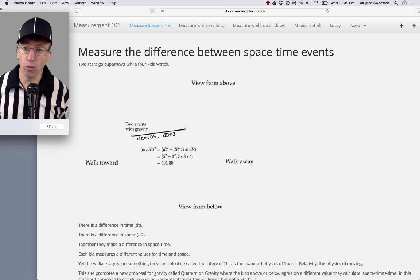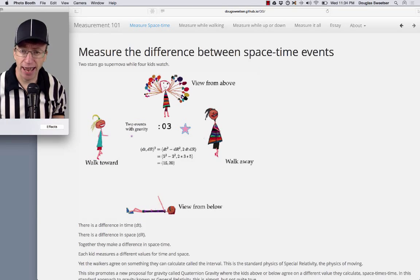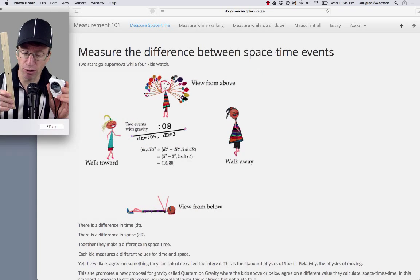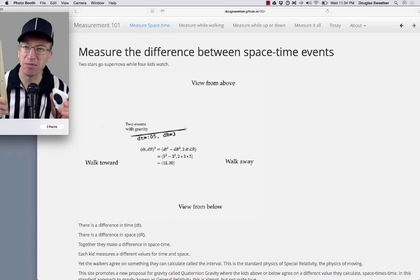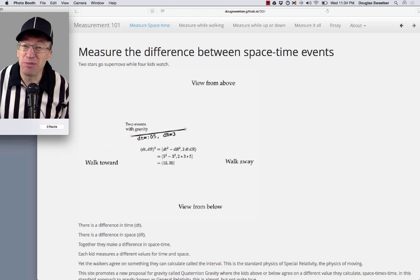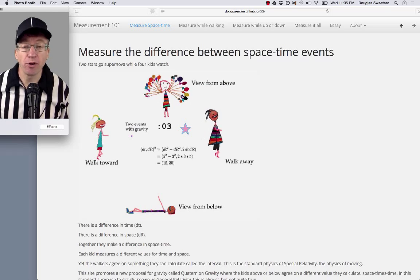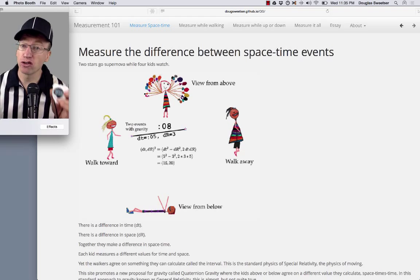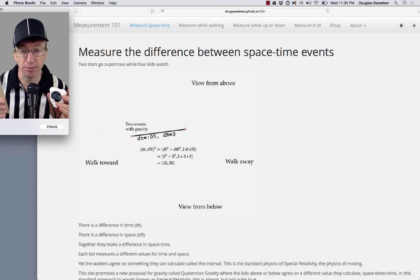Four kids are watching all of this stuff go on. Now, each kid makes a different measurement of time and a different measurement of space, so long as these are absurdly accurate devices they're carrying with them. And they're just not going to be the same. Now, on this website, I'm going to show you what the four kids can agree upon. And it involves squaring the values that they get from the time measurement and the space measurement.